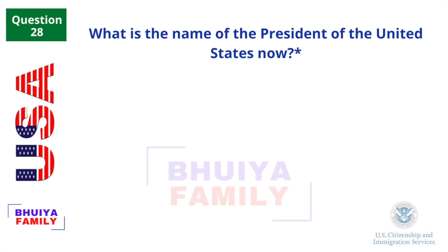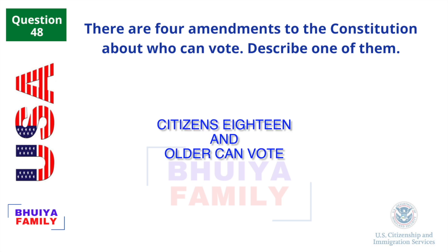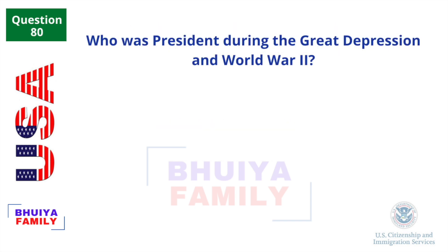What is the name of the President of the United States now? Joe Biden. There are four amendments to the Constitution about who can vote. Describe one of them. Citizens 18 and older can vote. Who was President during the Great Depression and World War II? Franklin Roosevelt.